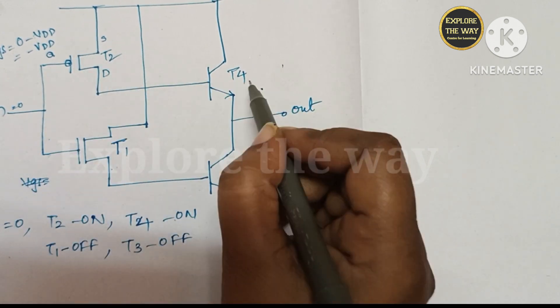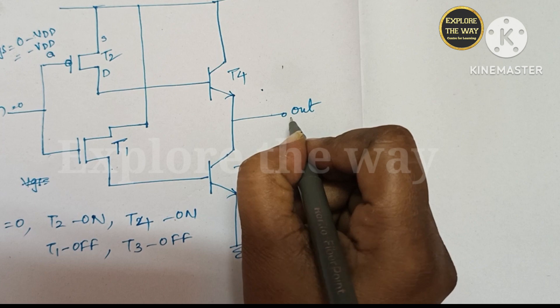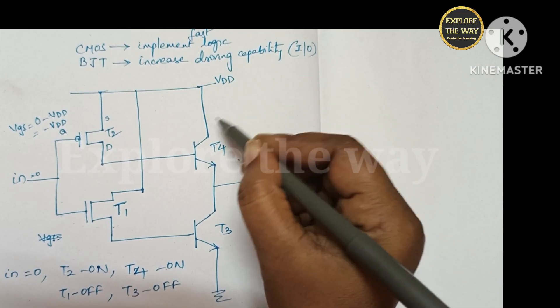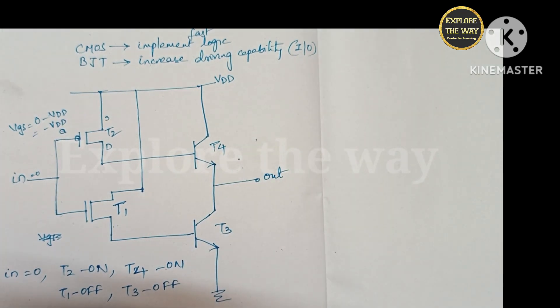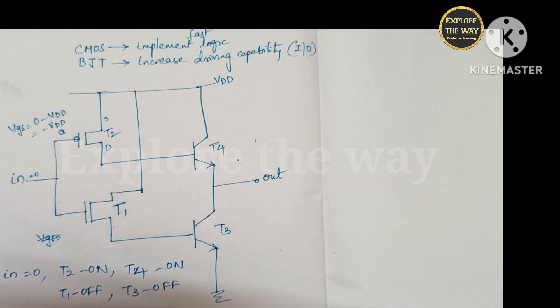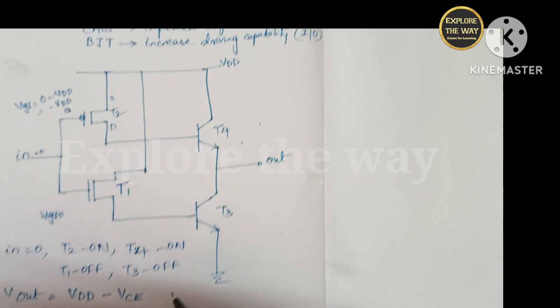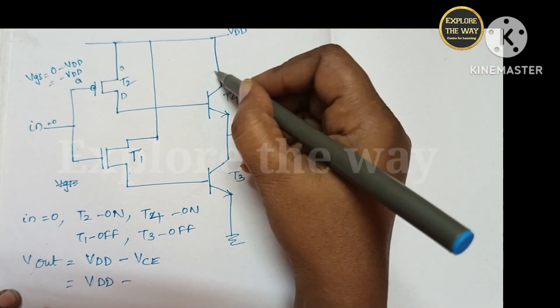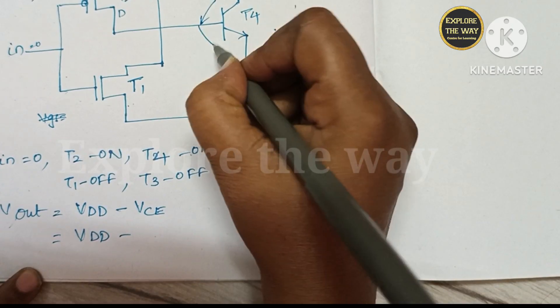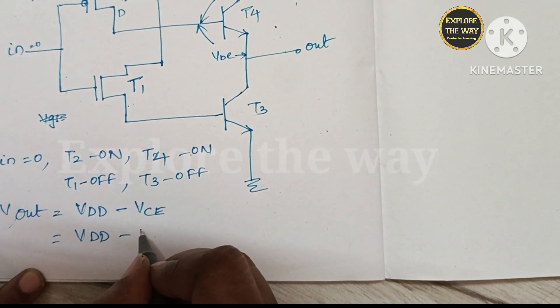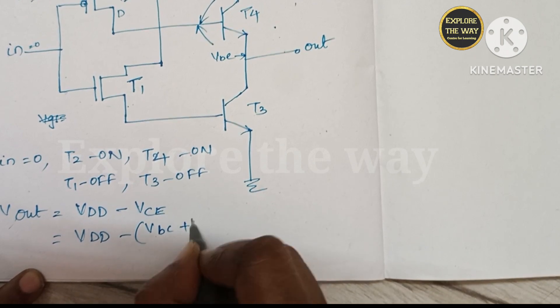So as T2 and T4 are turned on, then what is its output? Here the output is equal to VDD minus drop across this transistor. So VDD minus here, the voltage across this is VCA, which is equal to VDD minus VCA, which is equal to sum of these two voltages, VBC and VBA. So here which is equal to VBC plus VBA.